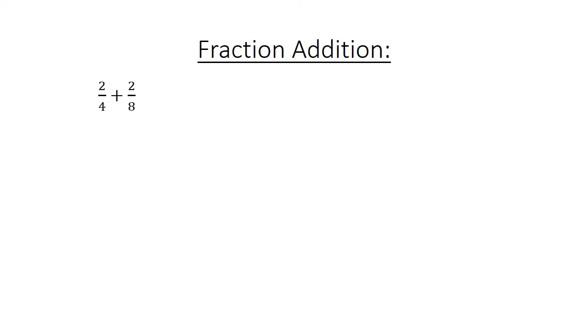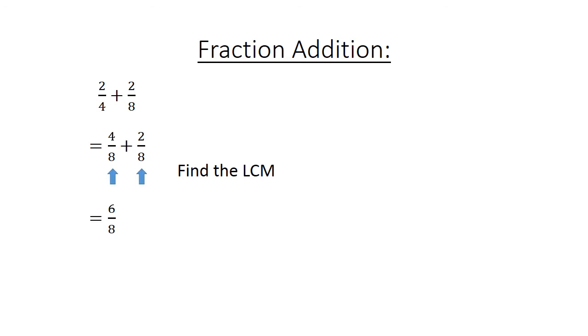Fraction addition: 2 over 4 plus 2 over 8 equals 6 over 8. Find the lowest common multiple — 8. So 4 over 8 plus 2 over 8 equals 6 over 8, and in simplest form: 3 over 4.